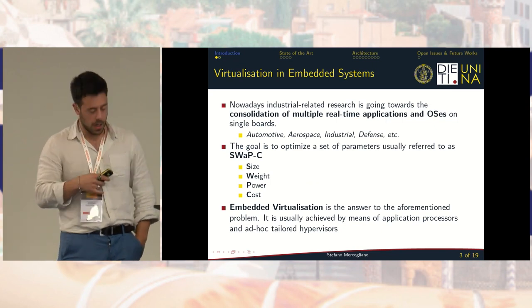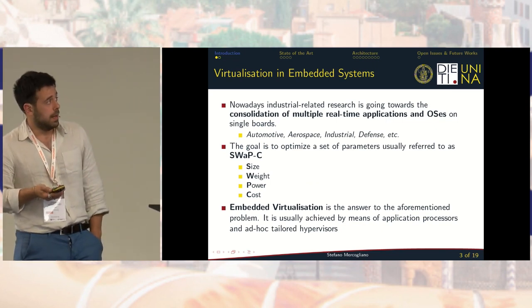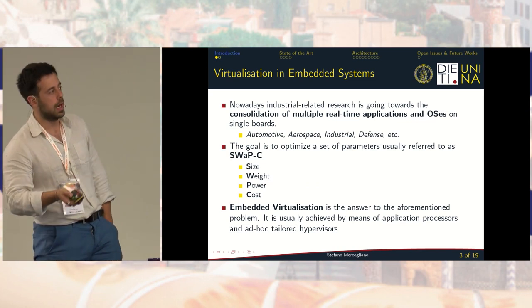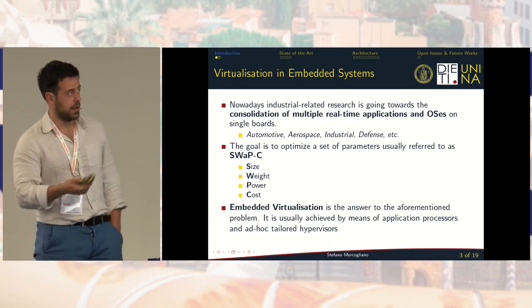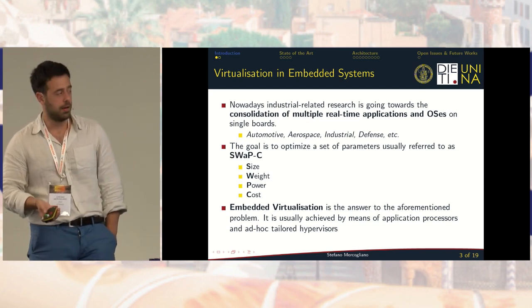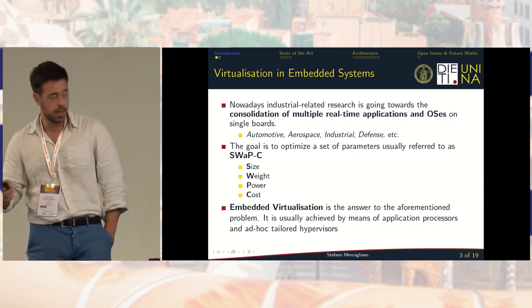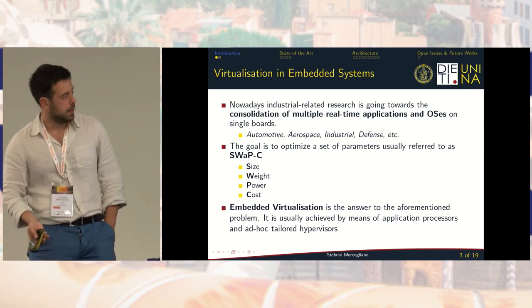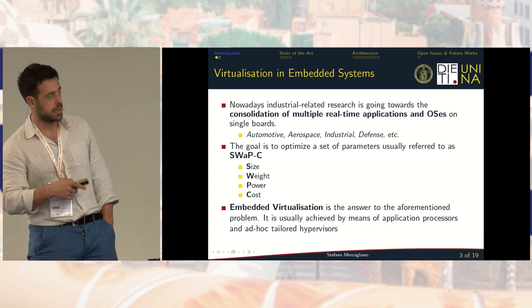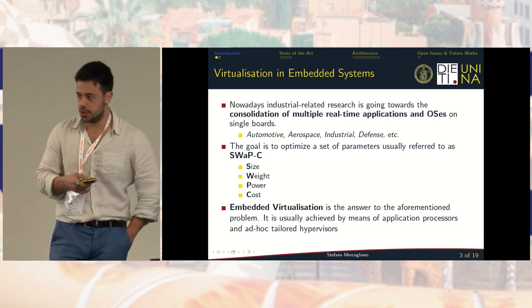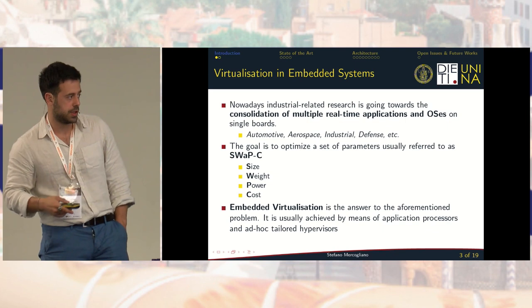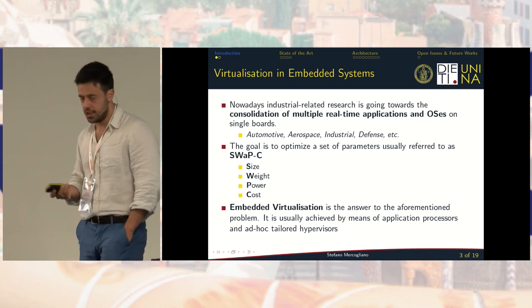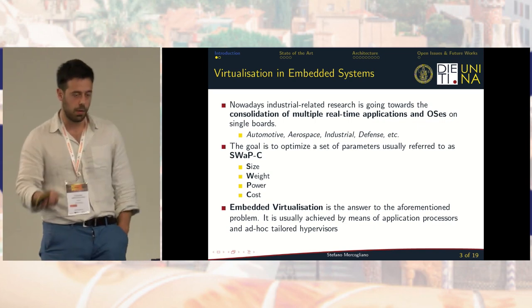Nowadays, industrial-related research is going towards the consolidation of multiple real-time applications and operating systems on single boards, and that's true for many scenarios such as automotive, aerospace, industrial defense, and many more. The goal is to optimize a composite parameter called SWAP-C, which stands for size, weight, power, and cost. One possible solution is embedded virtualization, usually achieved by means of application processors and ad hoc-tailored hypervisors, such as partitioning-based hypervisors like PAO and Jailhouse.